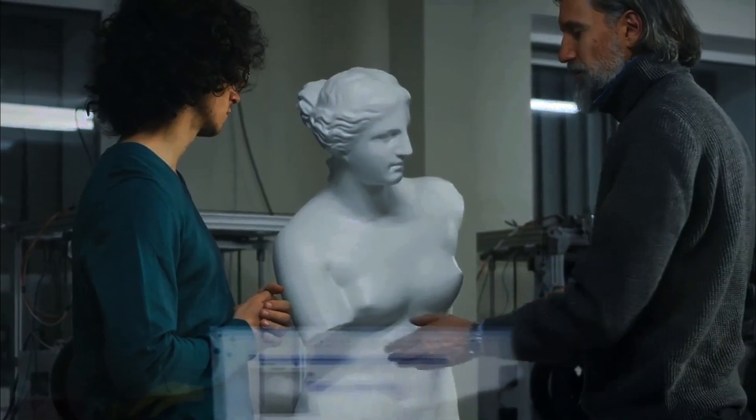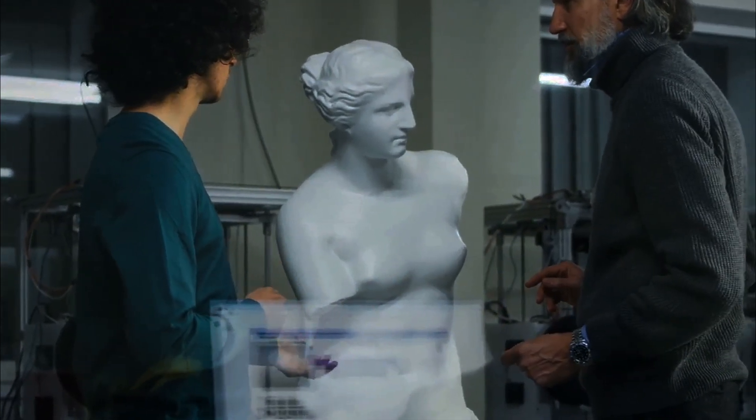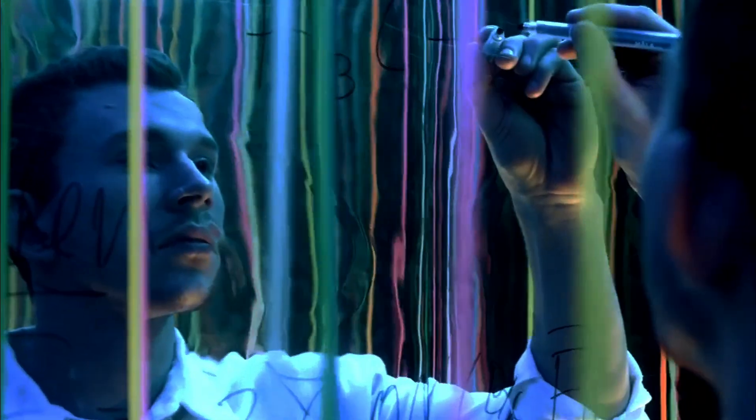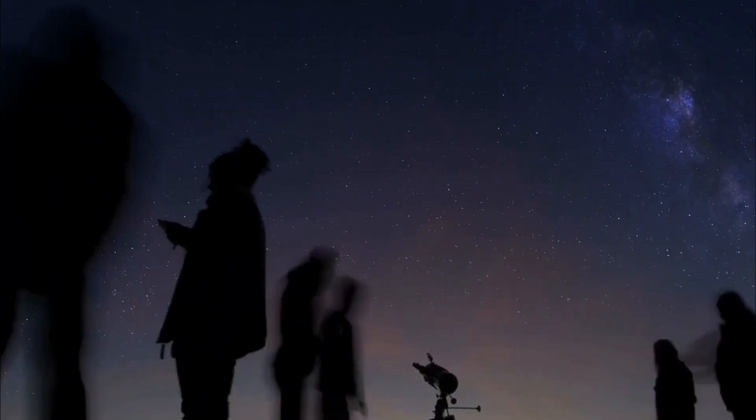Ancient Greek physicists made significant strides in understanding the natural world. Early philosophers like Thales and Anaximander sought natural explanations for phenomena. Aristotle established a comprehensive system of physics. The Greeks also explored Earth's place in the cosmos.